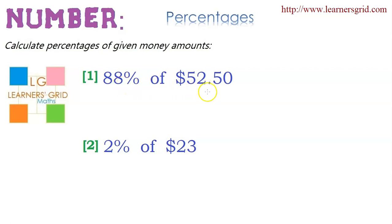88% of $52.50. One of the key things you have to know is that the word of really means multiply. So if we know that, we can start to solve this. One of the things we have to do is convert all the numbers into the same form, and we're going to use fractions. So 88%, well, percent means per 100 or out of 100. So, of course, it means 88 out of 100.